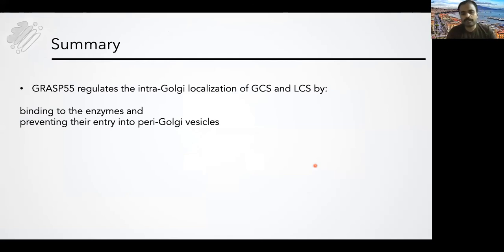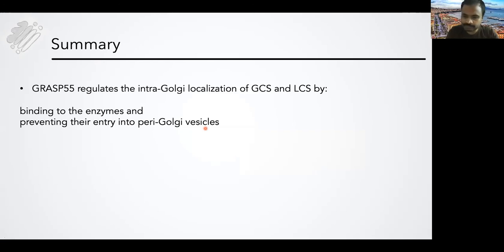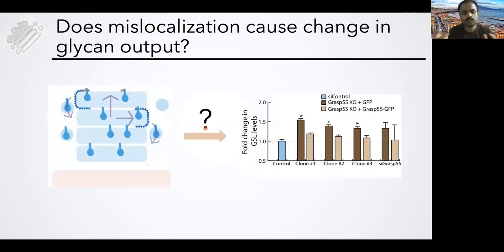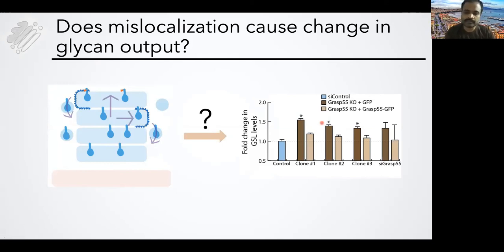To summarize: GRASP55 regulates intra-Golgi localization of these two enzymes by binding to them and preventing their entry into peri-Golgi vesicles. Coming to the sphingolipid biosynthetic part, we have two things happening when we remove GRASP55: the enzymes move from the trans to the cis side, and there is increased production of glycosphingolipids. While these two happen together when GRASP55 is removed, it is not clear whether there is a causal relationship — whether the change in localization is what leads to a change in glycosphingolipid production.